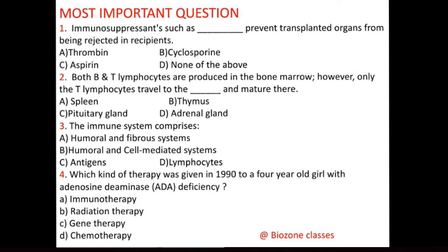Question number 3: The immune system comprises — A. Humoral and fibrous system, B. Humoral and cell-mediated system, C. Antigen, D. Lymphocyte. The correct answer is B, humoral and cell-mediated systems.